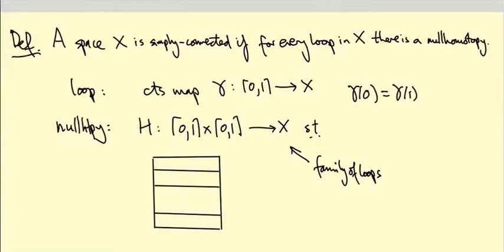So if I call this coordinate t and this coordinate s, then H of (s, 0)...